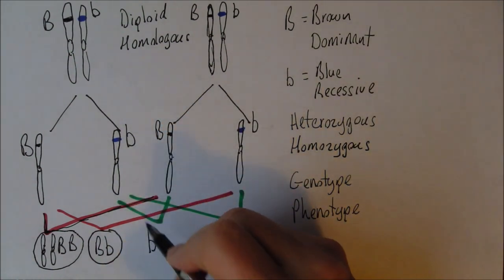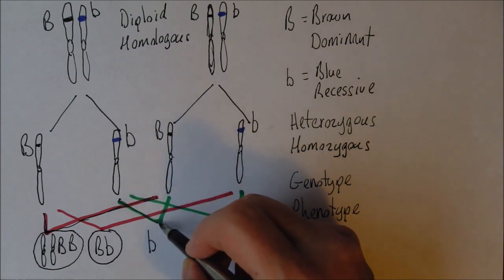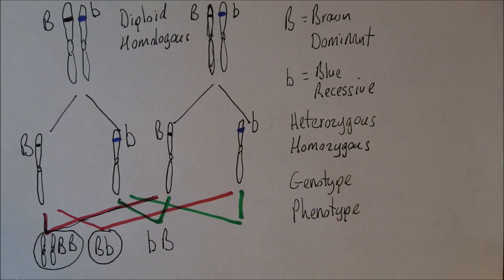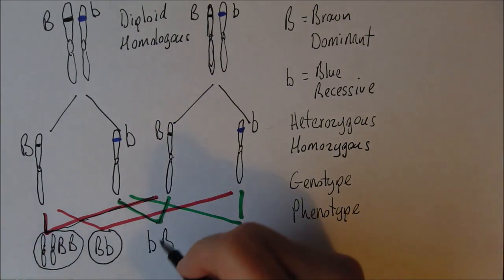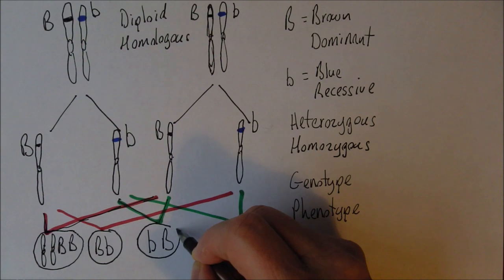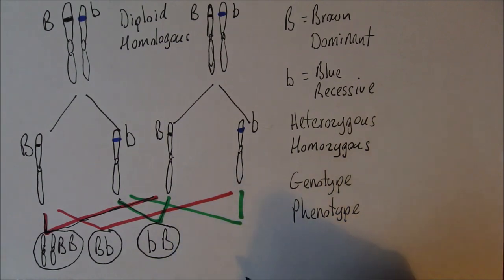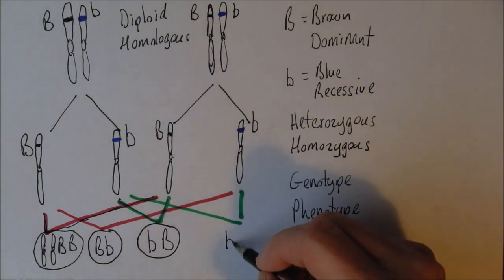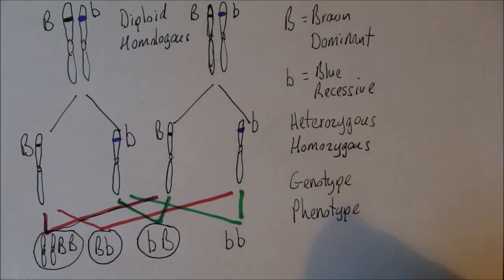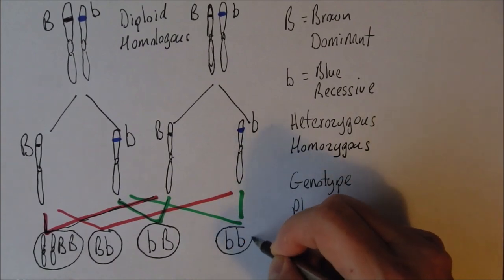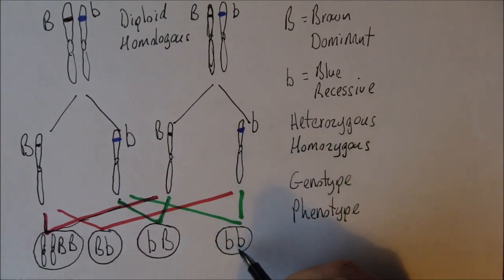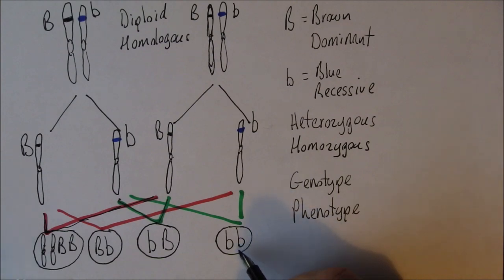In another combination, we've got a small B from one parent and a large B from the other. Again, we get a zygote which can grow into a child that is heterozygous for eye colour, but phenotypically they will be brown-eyed because of the presence of the dominant gene. But in the final combination, we've got a small B from one parent and a small B from the other, so this child is genotypically homozygous for the recessive gene, and therefore phenotypically they will have blue eyes.